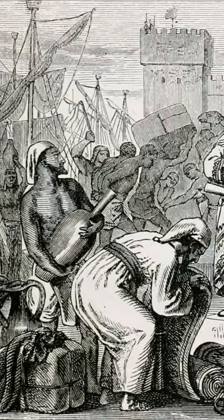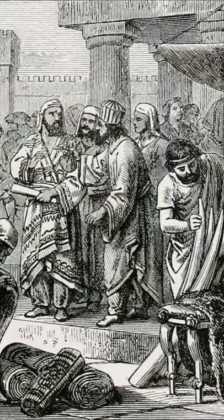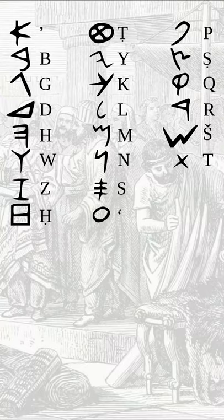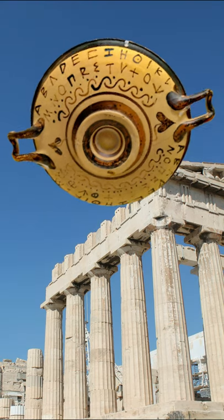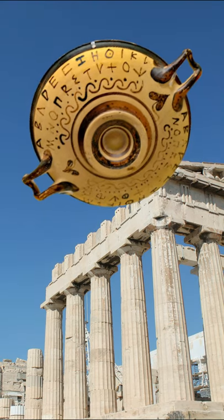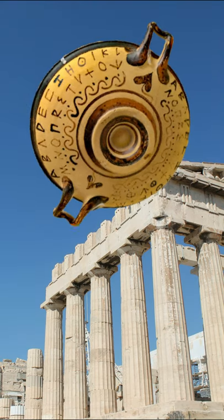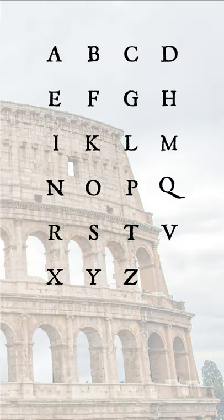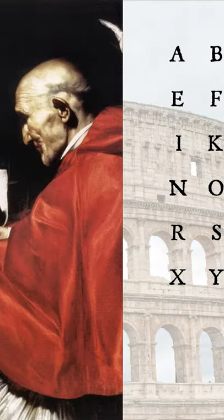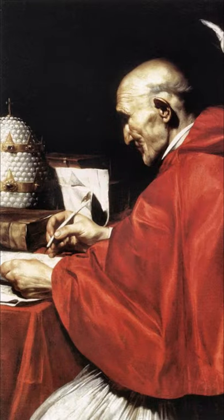Phoenician traders shared their Semitic writing with Greeks, who tweaked it and added vowels to write Greek. Greek immigrants to Italy shared this alphabet with Romans, who turned it into Latin, which the Catholic Church used.